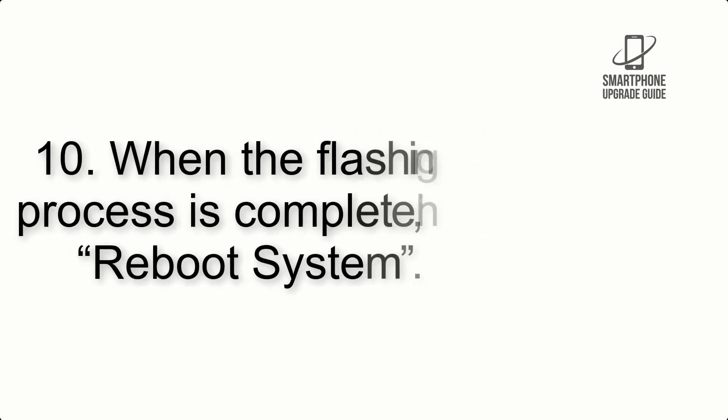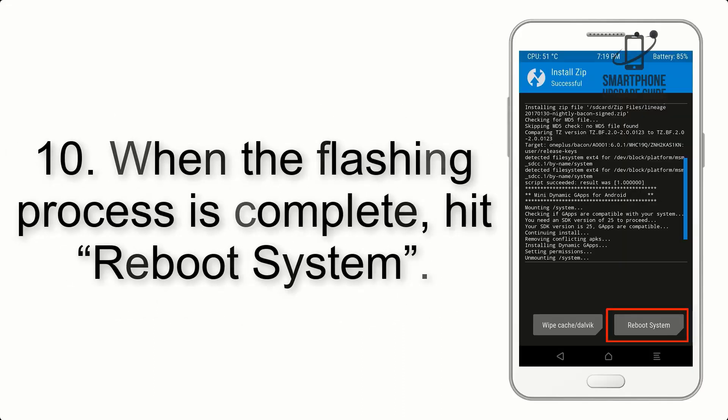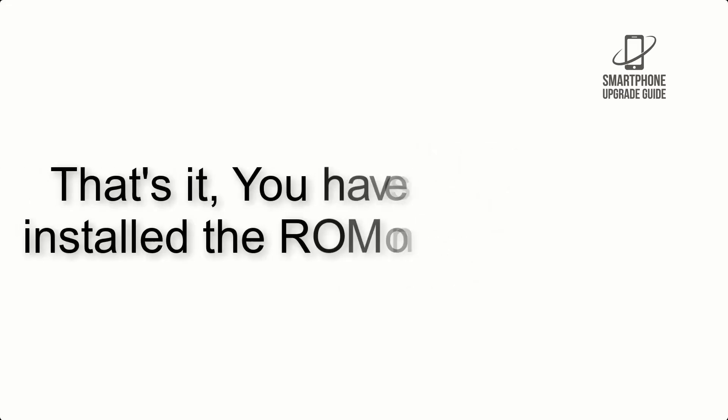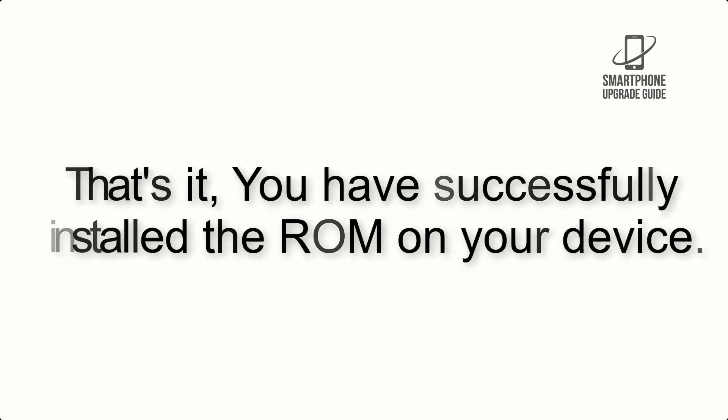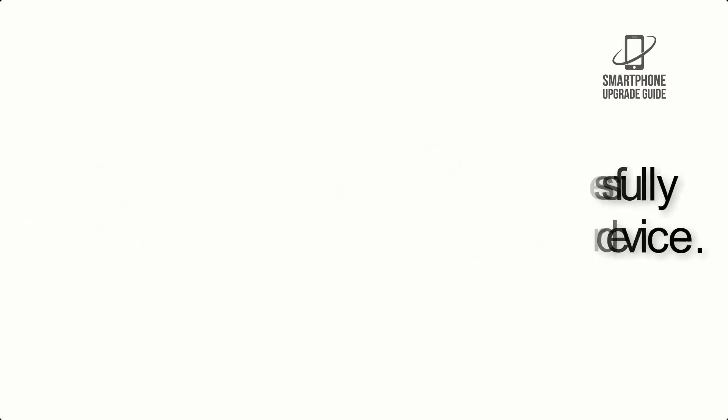Step 9: After GApps flashing completes, select Wipe Cache and Dalvik from the bottom left side of the screen and swipe to wipe. Step 10: When the flashing process is complete, hit Reboot System. That's it — you have successfully installed the ROM on your device.